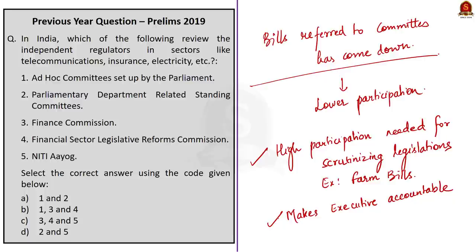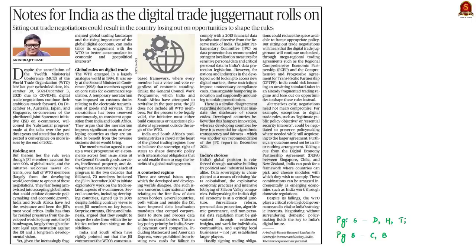In summary: DRSCs are standing committees, there are 24 of them, the first 8 have chairmen appointed by the Chairman of Rajya Sabha and the remaining 16 by the Speaker of Lok Sabha. They have 31 members total — 21 from Lok Sabha and 10 from Rajya Sabha — and ministers cannot be members. They carry out important functions including examining bills.